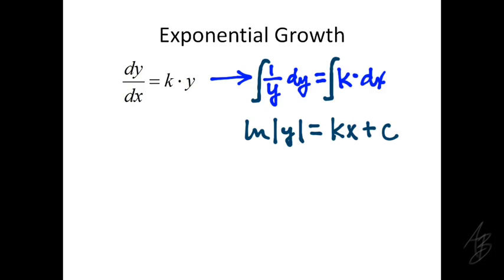To get y by itself we can exponentiate both sides and we get the absolute value of y equals e to the kx plus c. If we remember one of our laws of exponents we can rewrite this as e to the kx times e to the c.